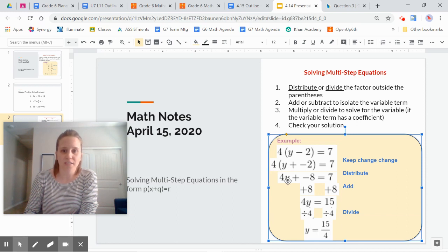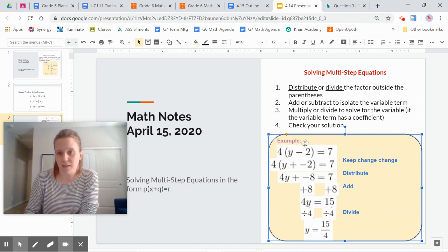So I went ahead and distributed the 4 to y and got 4y. And I distributed the 4 to negative 2 and I got negative 8. That's right, because a positive times a negative is a negative, equals 7. Once I get to this step, the equation looks exactly the way that it did yesterday. And I'm just following now step 2 and 3, which were the same as yesterday's work. So I'm going to add 8 to both sides in order to make my constant term 0. Negative 8 plus 8 is 0. So I'm just left with 4y equals 15.